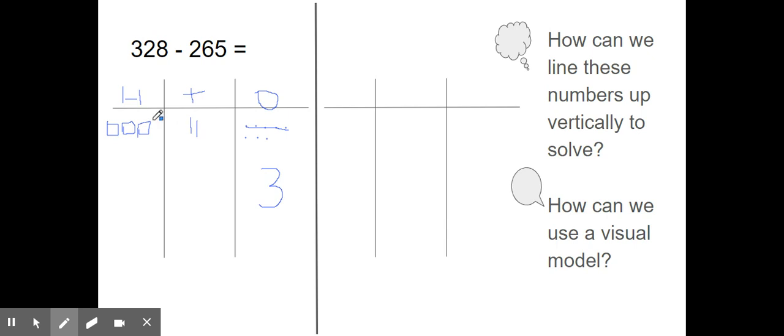I'm taking this 100 and I'm unbundling it into the tens place. How many tens make up 100? 10. 1, 2, 3, 4, 5, 6, 7, 8, 9, 10. There are 10 tens in 100.